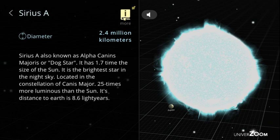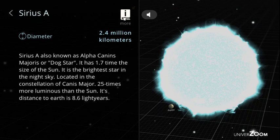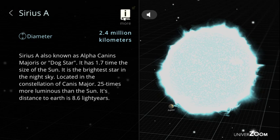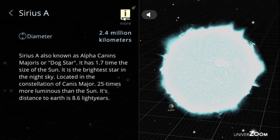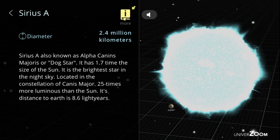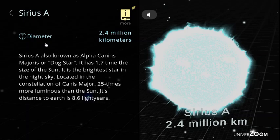Sirius A, diameter: 2.4 million kilometers. Sirius, also known as Alpha Canis Majoris or Dog Star. It has 1.7 times the size of the sun. It is the brightest star in the night sky. Located in the constellation of Canis Major, 25 times more luminous than the sun. Its distance to Earth is 8.6 light-years.